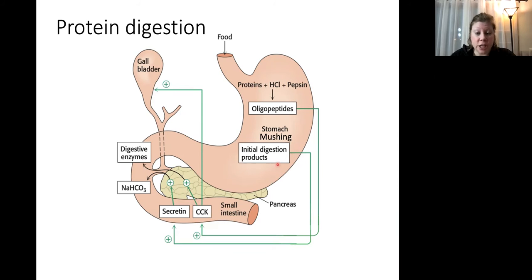Other products of digestion can trigger different cells inside the small intestine to release secretin. Secretin also acts on the pancreas, helping to stimulate digestive enzyme release, and also especially this bicarbonate, which will neutralize the acid from the stomach. Okay. So we're going to spend some time thinking about what happens to proteins in the stomach.